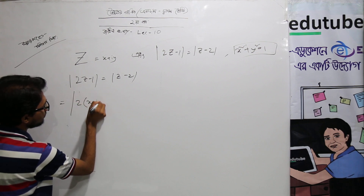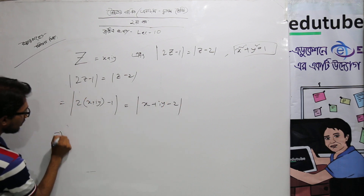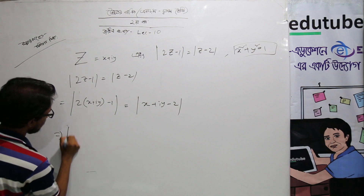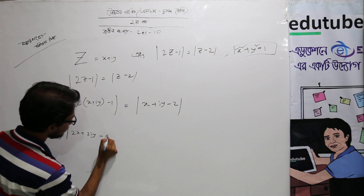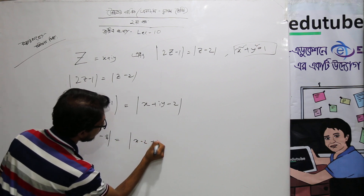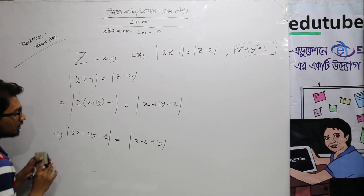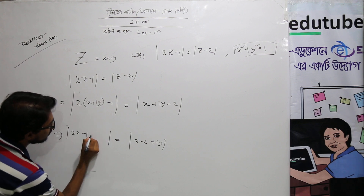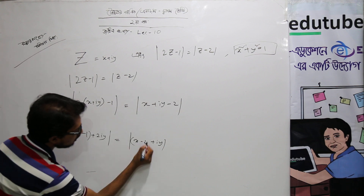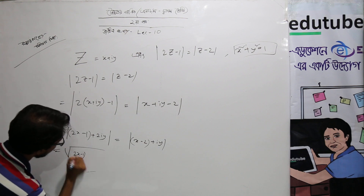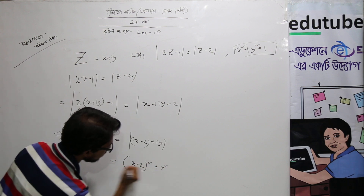Substituting: 2(x + iy) minus 1 equals z minus 2, so 2x plus 2iy minus 1 equals x minus 2 plus iy. Then: (2x - 1) plus 2iy. Taking moduli squared: (2x - 1) whole square plus (2y) whole square equals (x - 2) whole square plus y squared.